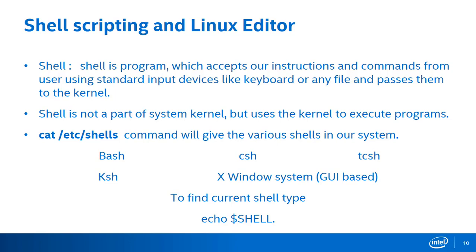The shell is a program that accepts instructions and commands from the user using standard input devices like a keyboard or file, and passes them to the kernel. The command 'cat /etc/shells' gives information about the different shells in your operating system — for example, bash shell, c shell, t shell, tc shell, k shell, and in the X Windows system which is GUI-based. To find the current shell, type the command 'echo $SHELL', which tells you which shell you are in.